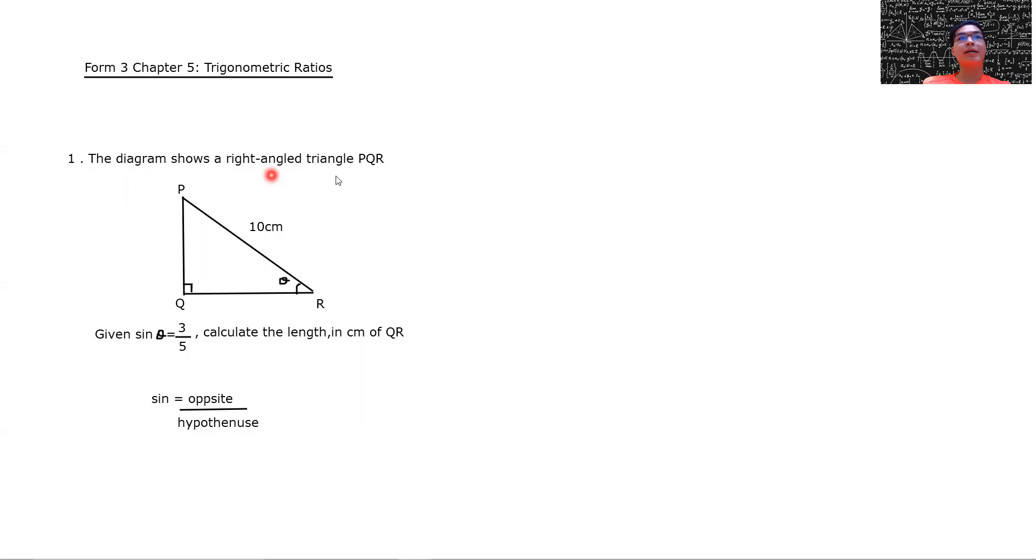Diagram shows a right angle triangle PQR. So here's the triangle PQR with the hypotenuse of 10 cm. Given sin theta equal 3 over 5, calculate the length of QR in cm. So here we need to find the length of QR and it's given 10 cm. As I said, hypotenuse is 10 cm.